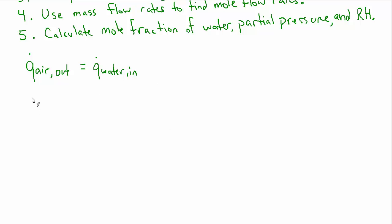I'll explain why. So for air, let's write M dot air, I'll just put A for air, CP delta T. And then on the right, I'll do M dot W for water, delta H for water.